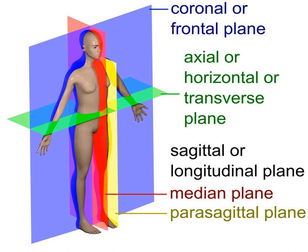A sagittal plane, or longitudinal plane, is an anatomical plane which divides the body into right and left parts. The plane may be in the center of the body and split it into two halves, or away from the midline and split it into unequal parts. The anatomical term sagittal was coined by Gerard of Cremona.